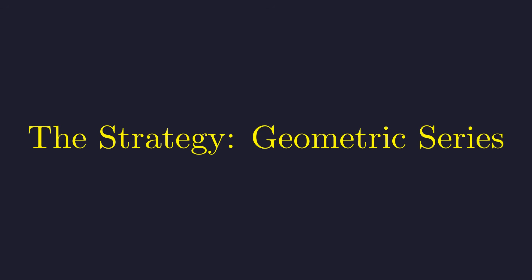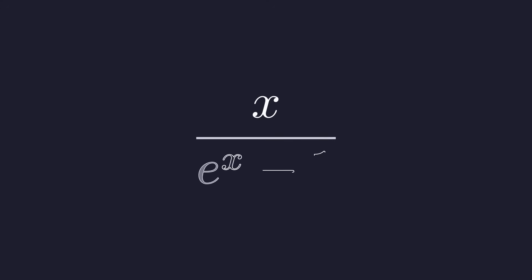The key insight here is turning the thing we're integrating into an infinite series. Let's focus on what we're integrating. The tricky part is this e to the x minus 1 in the denominator. To massage this into something more useful, we can multiply both top and bottom by e to the negative x.